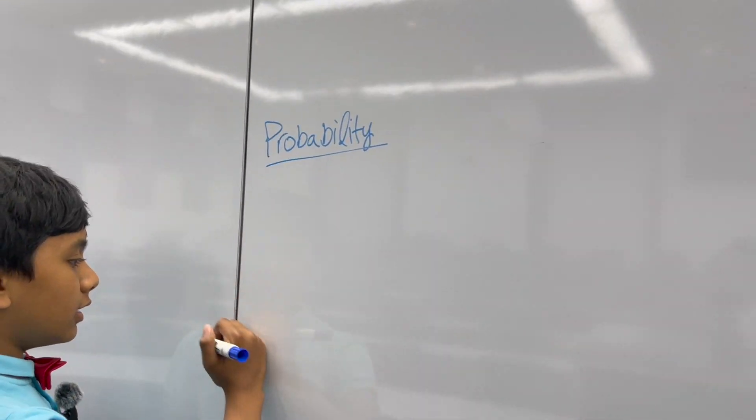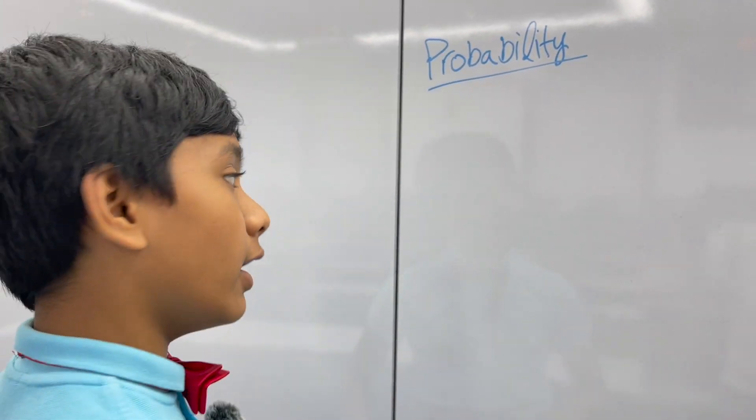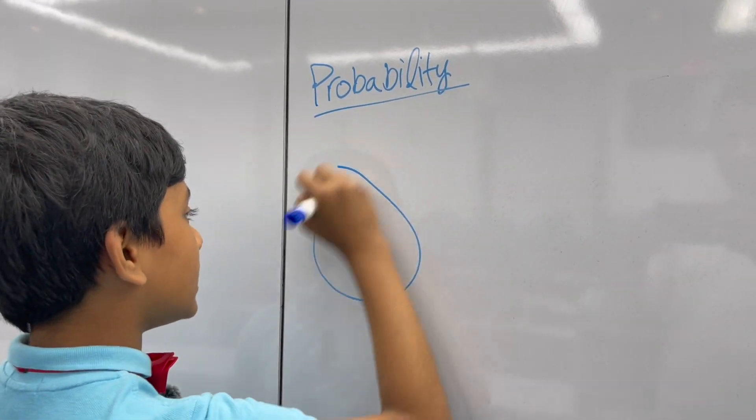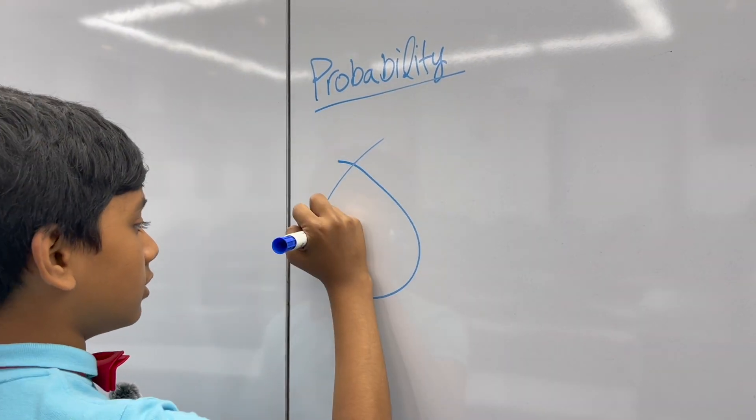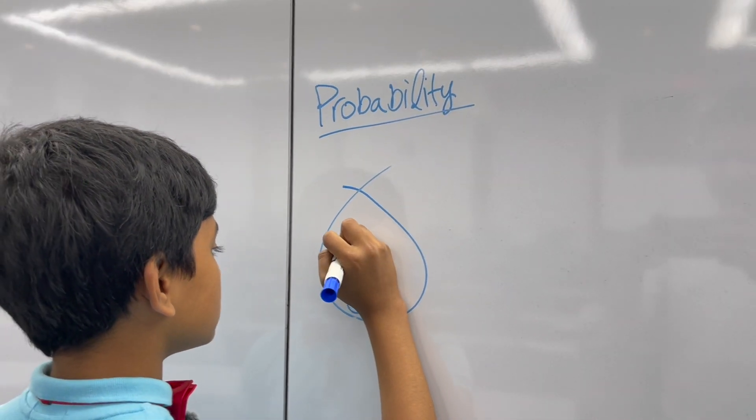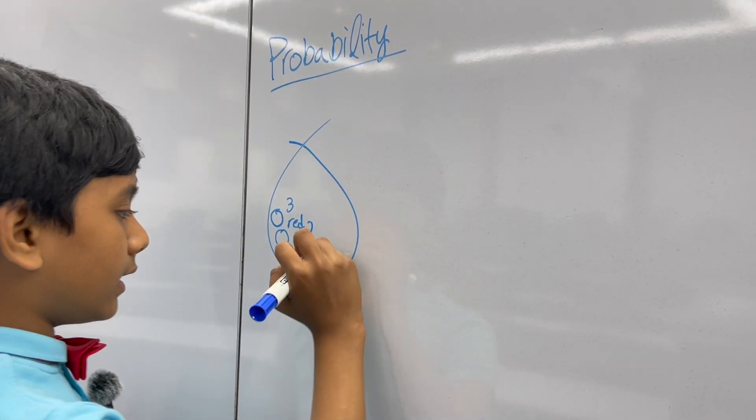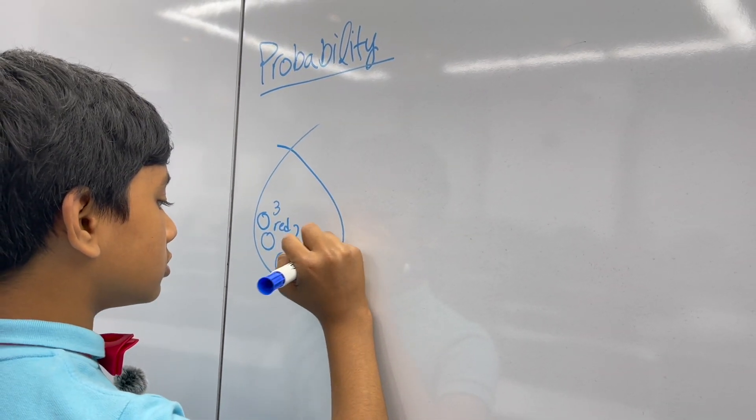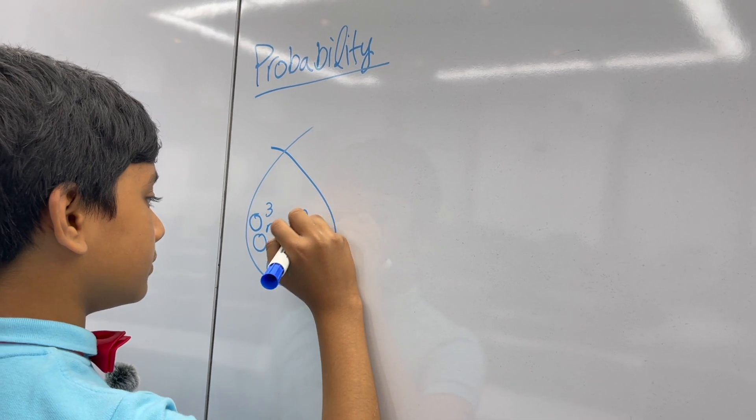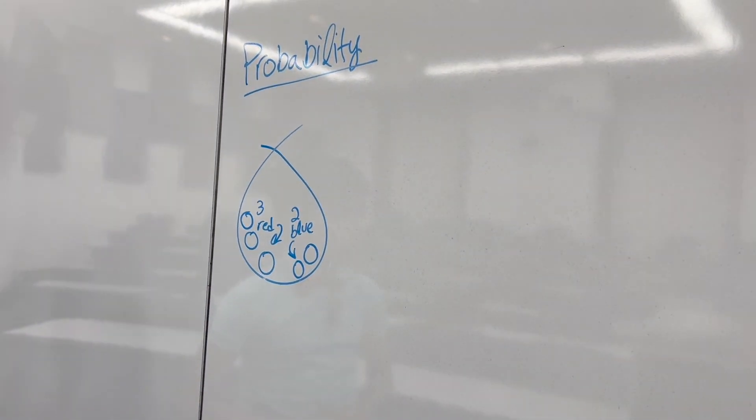Alright, so let me think of a basic probability example off the top of my head. Oh, I know one. Let's say you have a bag, I don't know, with three red balls, so these are apparently red, and two blue balls. I should not have said it that way.